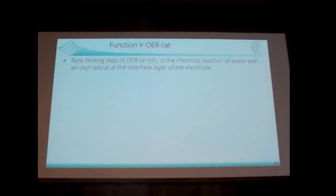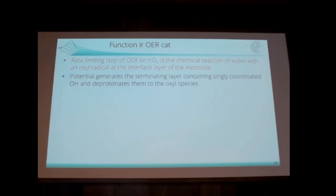Summary: the rate-limiting step of oxygen evolution is the chemical reaction of water with the oxyl radical, and this is a normal chemical reaction at the interface of the electrode. Potential generates the terminating layer containing thinly coordinated OH and deprotonates it to the oxyl — that is the function of the potential. That still has nothing to do with the oxygen evolution reaction itself.